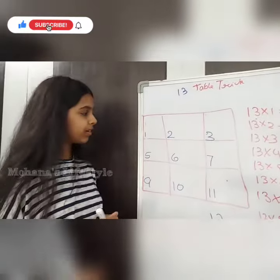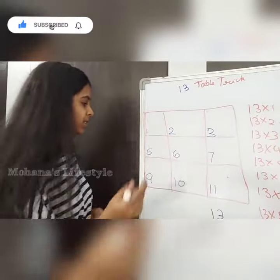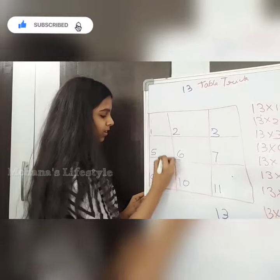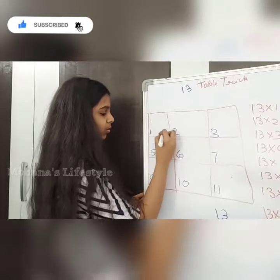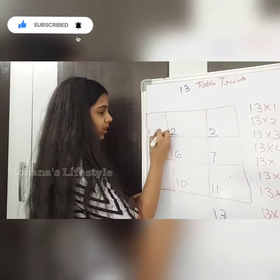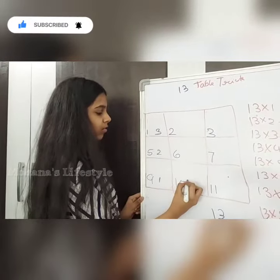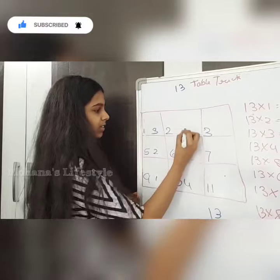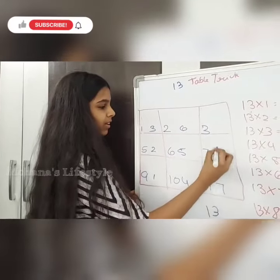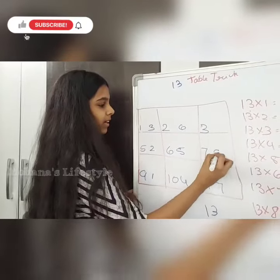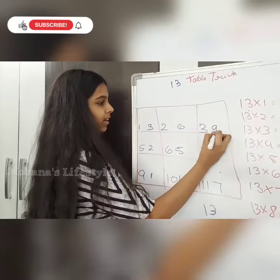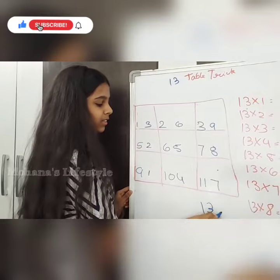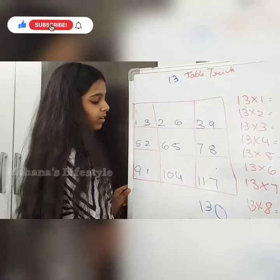Now on the right side, we are going to write numbers from 1, 2, 3, 4, 5, 6, 7, 8, and 9, and then write 0 at the end.